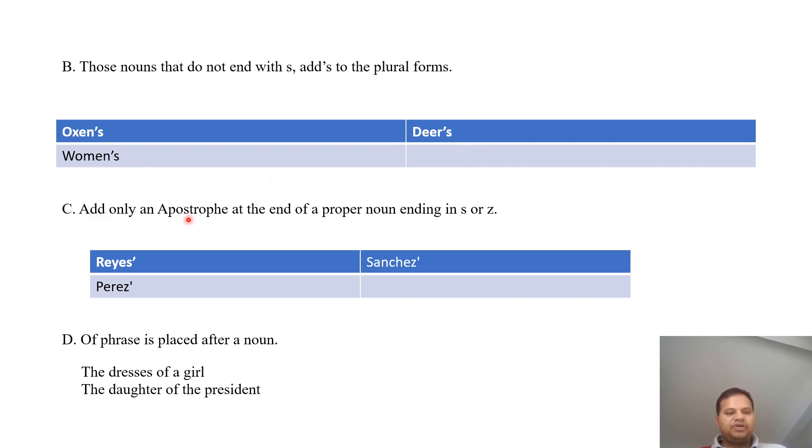Another category is add only an apostrophe at the end of a proper noun ending in s or z. For example, Reyes', Sanchez', Perez'.